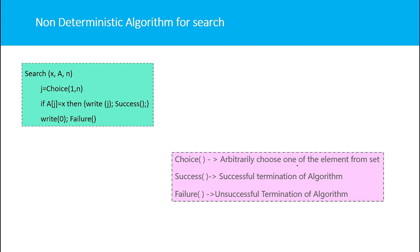The 'success' function is called on successful termination of the algorithm, and the 'failure' function is called on unsuccessful termination. So, a non-deterministic algorithm uses a choice function that returns the correct value — but we don't know what is happening inside it. We call this a non-deterministic algorithm; you then have to find a deterministic version of it.